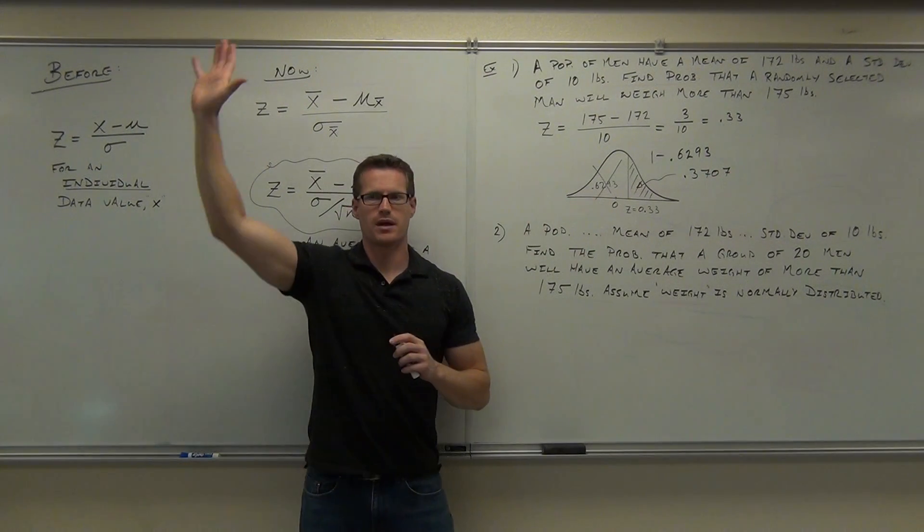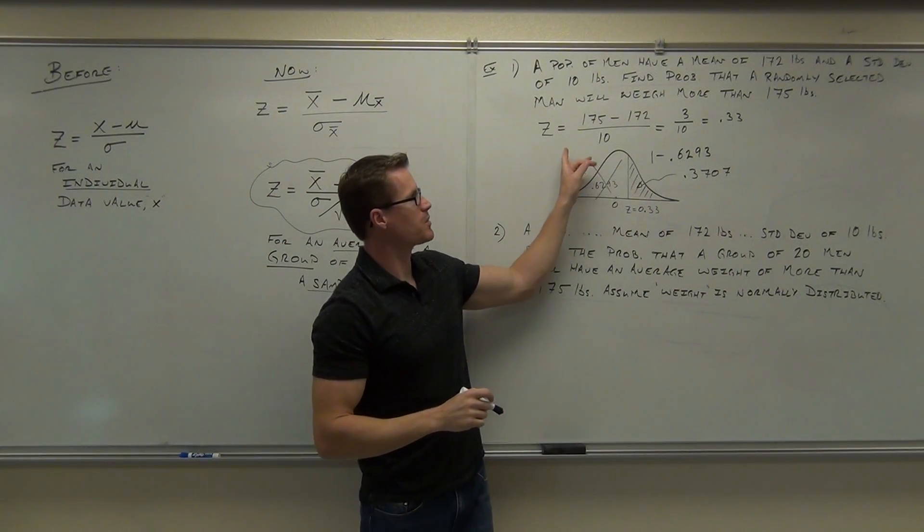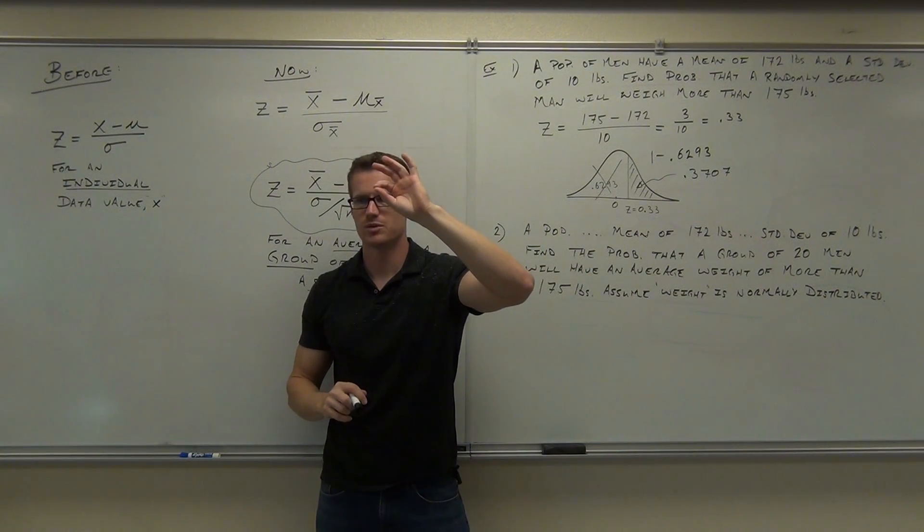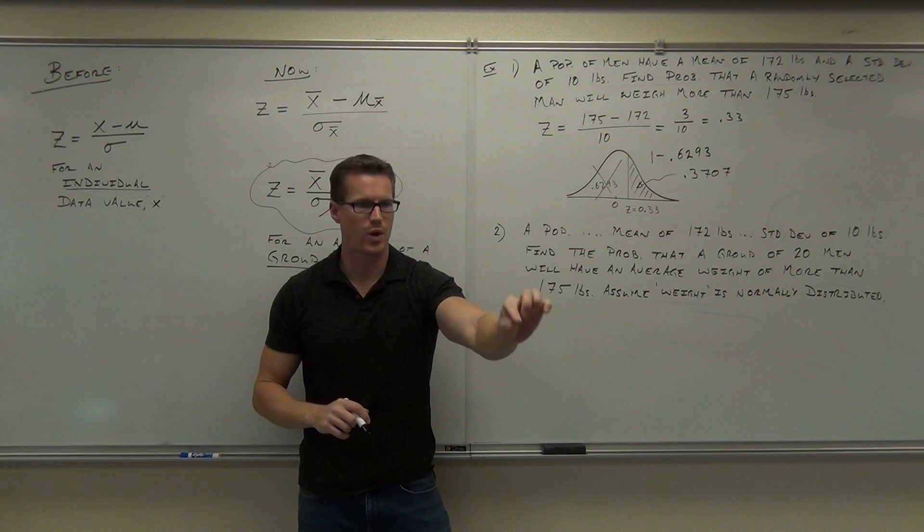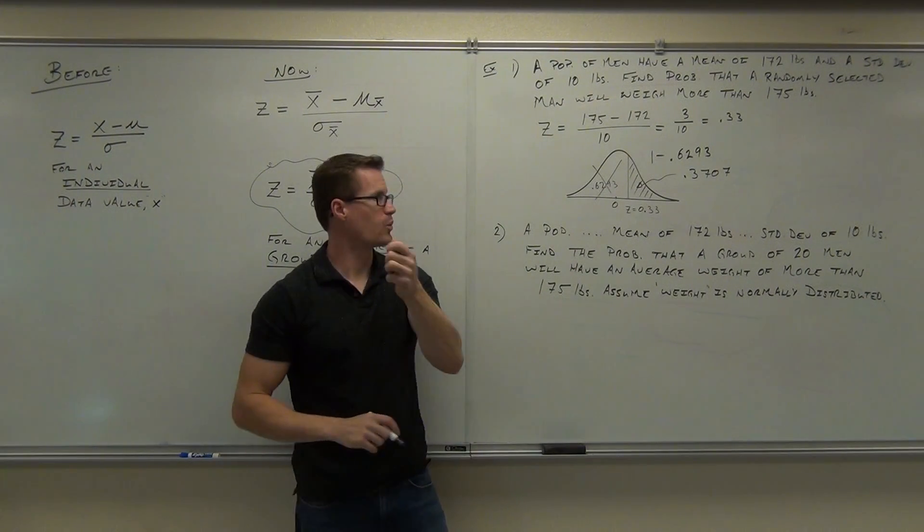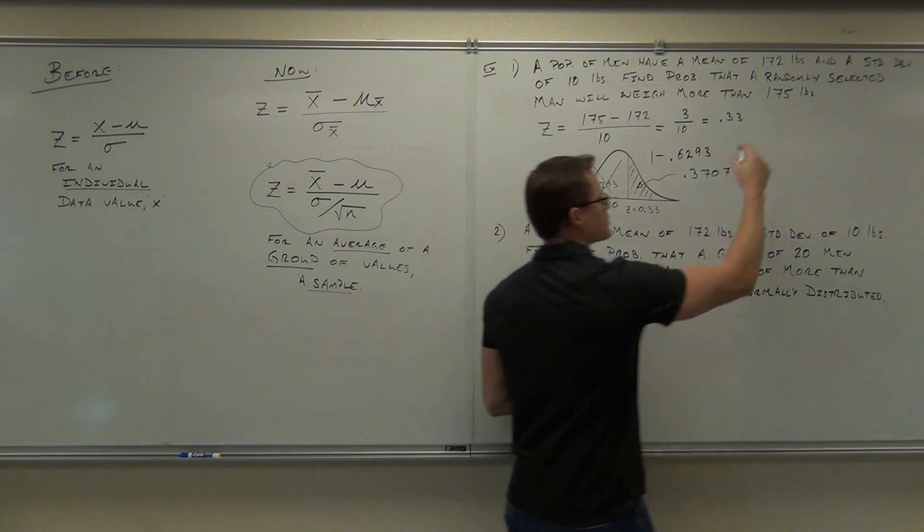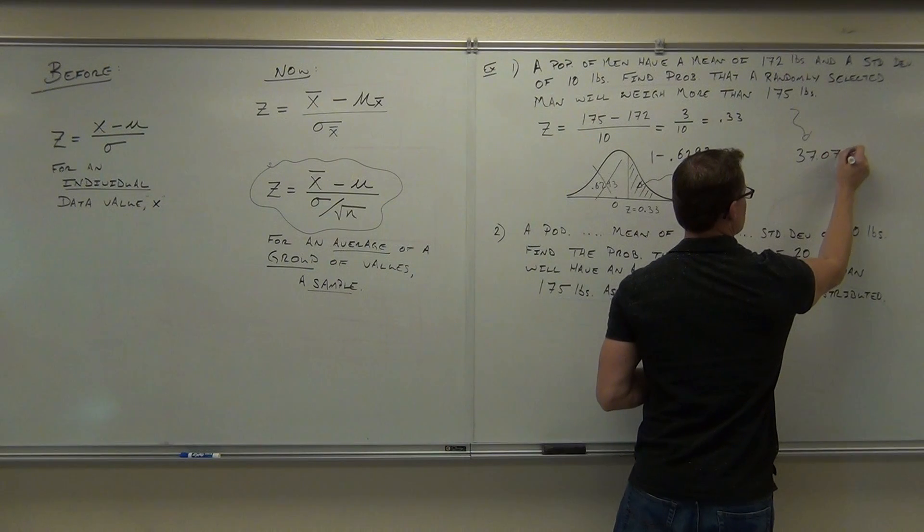How many were able to follow me on that? That's what you've done before. So this answer is, what's the probability you're going to take a randomly selected person out of this group? You need to know interpretation. You're going to go to this population of men, randomly select one guy, and he's going to weigh more than 175 pounds.